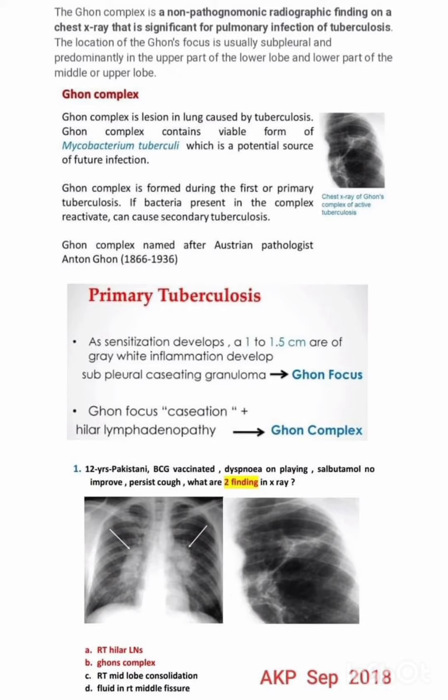On the right side we are seeing the chest x-ray of the Ghon complex. The Ghon complex is named after pathologist Anton Ghon. In primary tuberculosis, if sensitization develops, a 1 to 1.5 cm area of gray-white inflammation develops as a subpleural caseating granuloma — that is the Ghon focus. When the Ghon focus caseation plus hilar lymphadenopathy occurs, we call it the Ghon complex.